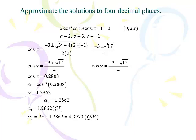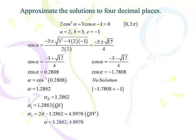Now for the other side: negative 3 minus √17 over 4 gives cosine α equals negative 1.7808. Taking inverse cosine of that gives an error — there is no angle whose cosine is less than negative 1 or greater than 1. So because negative 1.7808 is less than negative 1, there is no solution. We only ended up with two solutions here. You could get four solutions if both sides work, but quite often one side produces two solutions and the other side doesn't work.